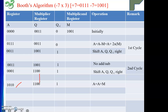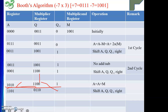Then we perform arithmetic shift right of the whole content A, Q, Q minus one as a single unit. A becomes 1 1 0 1, Q shifts to 0 1 1 0, and Q minus one becomes 0. Third cycle is complete.